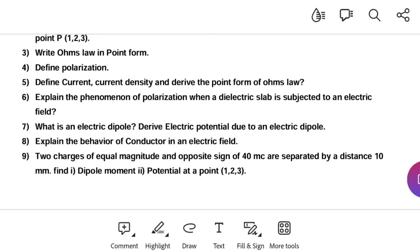Two charges of equal magnitude and opposite sign 40 micro coulomb are separated by a distance 10 mm. Find dipole moment and potential. We have to calculate by using formulas. These are the important questions on first unit and second unit.